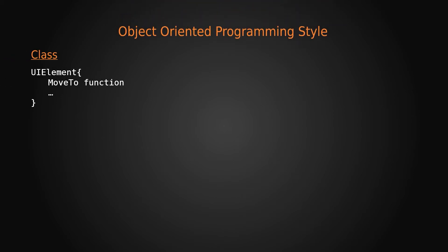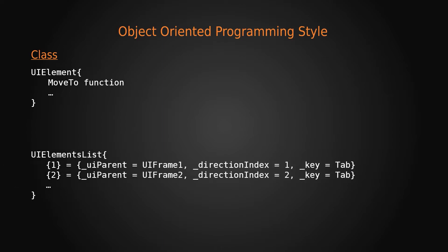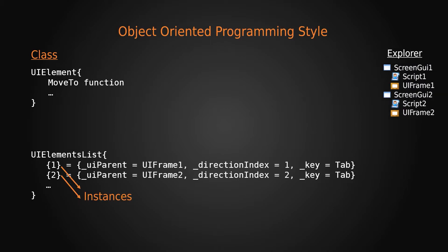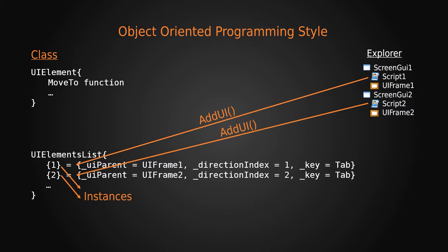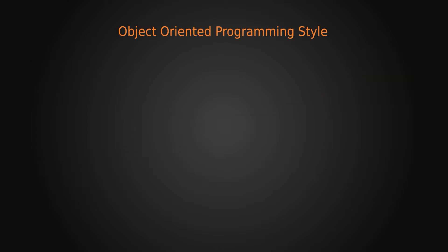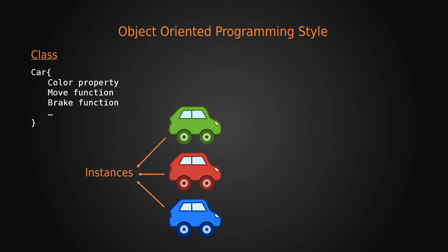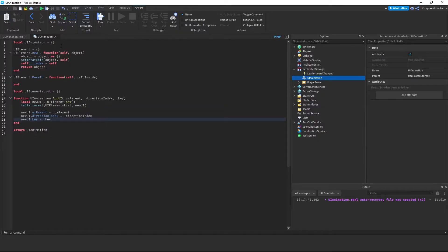Let me recap what I've done so far to make the OOP style clearer. Think of UIElements as a class with different functions and variables. Our UIElementsList table will be populated with different instances of UIElements coming from different scripts. Each time a script calls addUI, a new element with UIParent, directionIndex, and key information will be added. The reason I'm following an OOP approach is that the module script treats each element in UIElementsList as an instance of the UIElements class, so we can rely on common functions like moveTo — similar to how multiple cars in a game all share a move method.